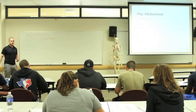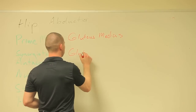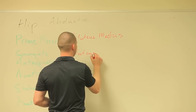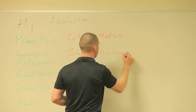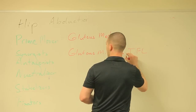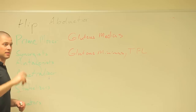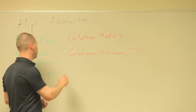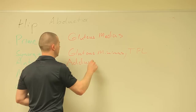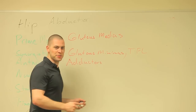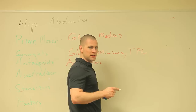Synergists: gluteus minimus and TFL. Antagonists: adductors — nice job. That one's kind of easy. Adductors — what's my acronym for adductors?